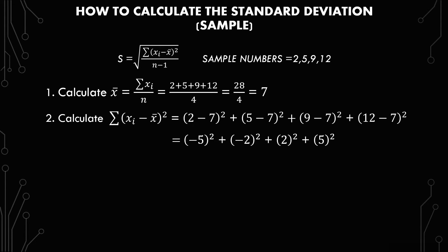Simplifying that, we have negative 5 squared plus negative 2 squared plus 2 squared plus 5 squared. And when you take two negatives and multiply them together like we have with negative 5 squared or negative 2 squared, it ends up becoming positive. So we have 25 plus 4 plus 4 plus 25, which yields 58.